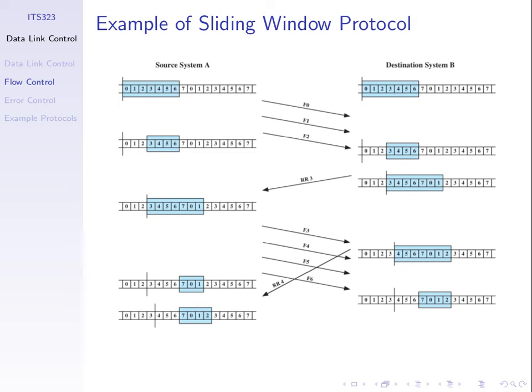This example considers the simpler case: one ACK for every data frame received, rather than one ACK acknowledging multiple frames. We want to consider that case and calculate the efficiency.